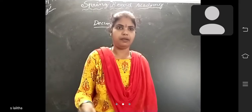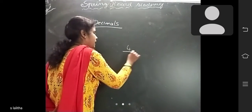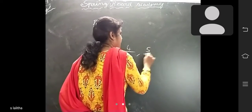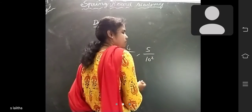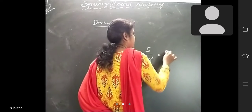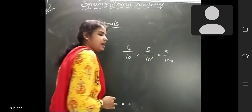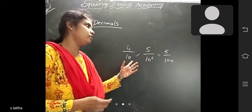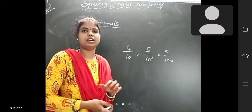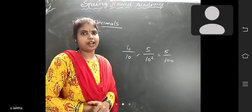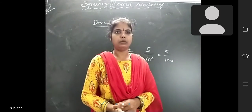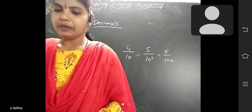That means any power of 10. Suppose 4/10 is there, or 5/10² — 10 squared means 100, so that is 5/100. So any fraction with a power of 10 in the denominator is called a decimal fraction. We already learnt this in types of fractions.